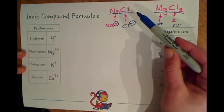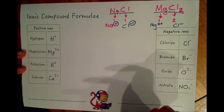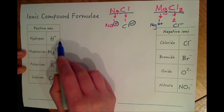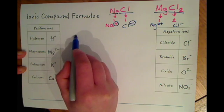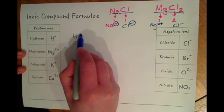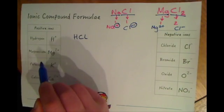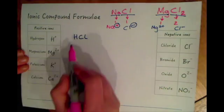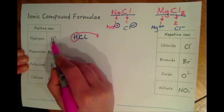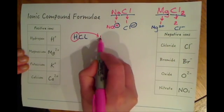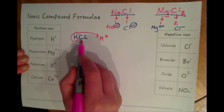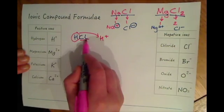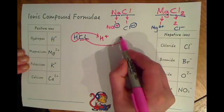I'm going to do a few more examples here to help you out with this. So if we wanted to write the formula for hydrogen chloride we'd need to break it down and have a look at the ions involved. So we've got hydrogen, and I've given you that here, that is H+, and we've got chloride which from over here is Cl-.